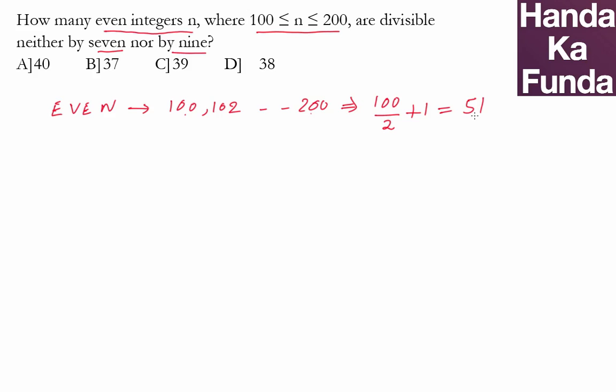So whatever is my answer, it is less than 51. I look back at the options; all my options are less than 51, so this doesn't really help. Now what I will do is I will remove the numbers that I do not like.